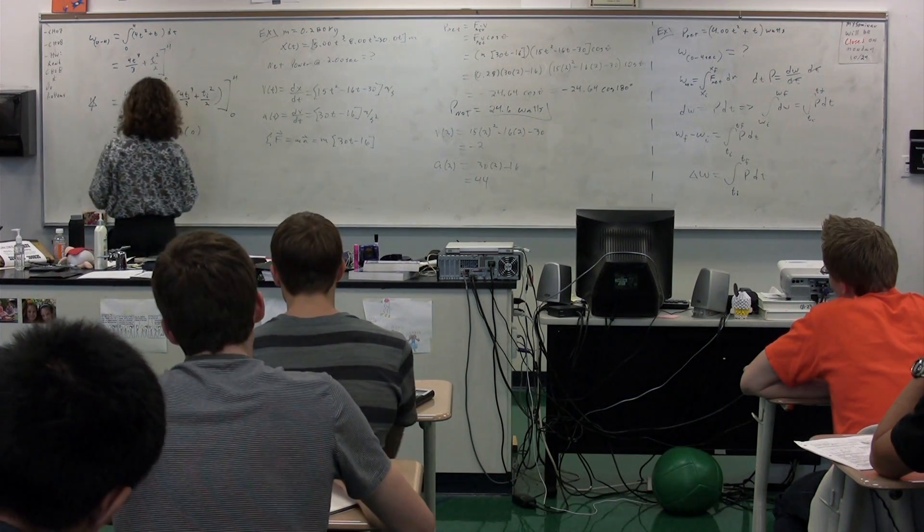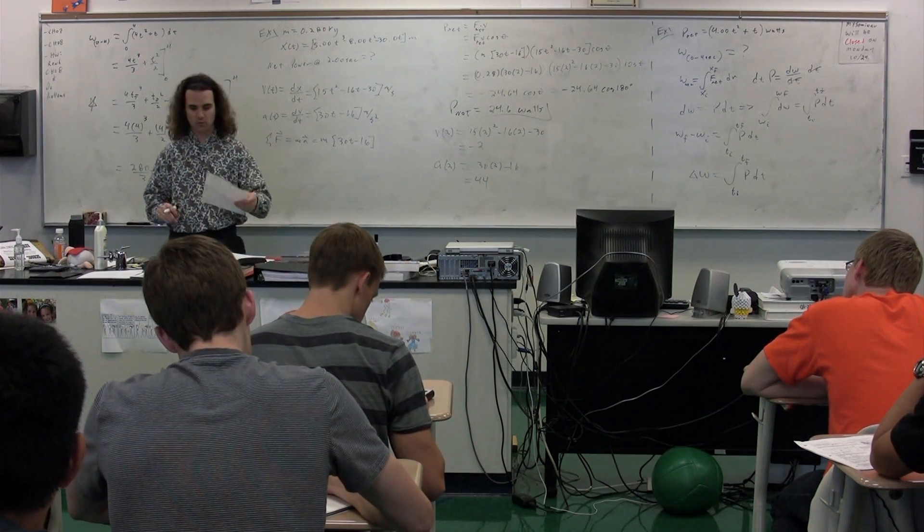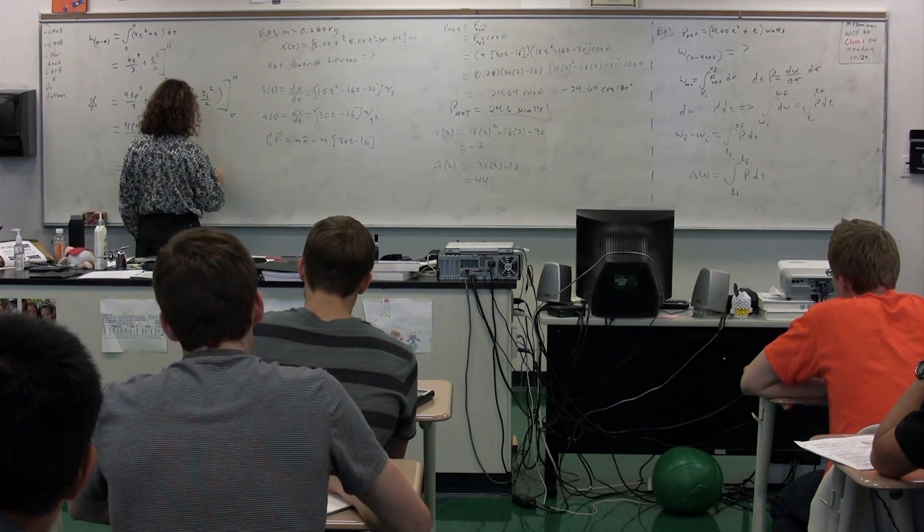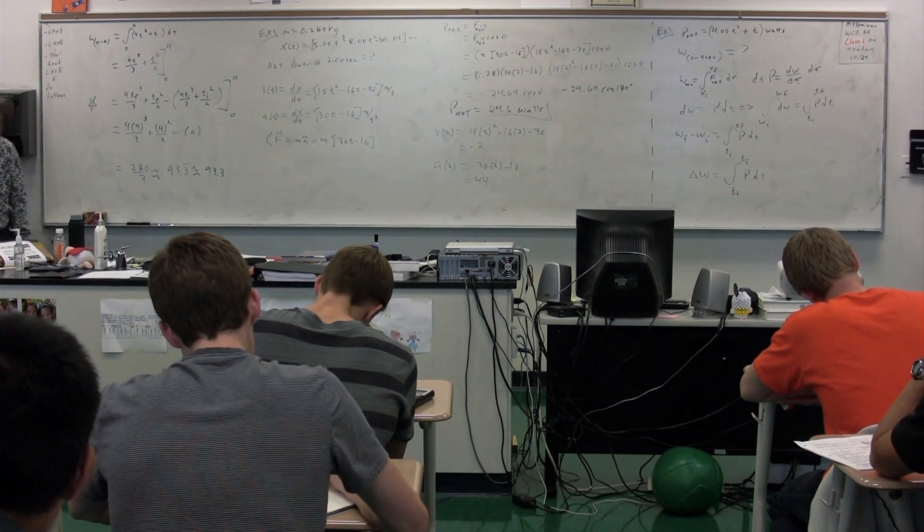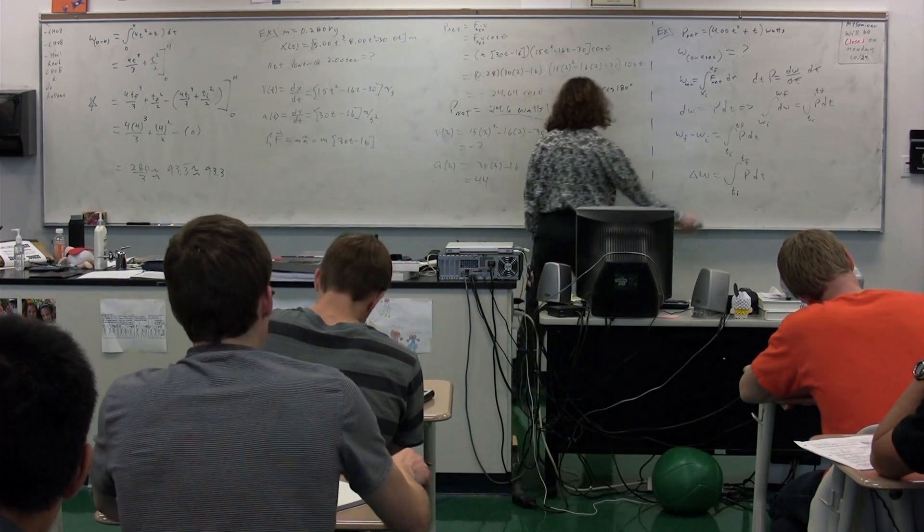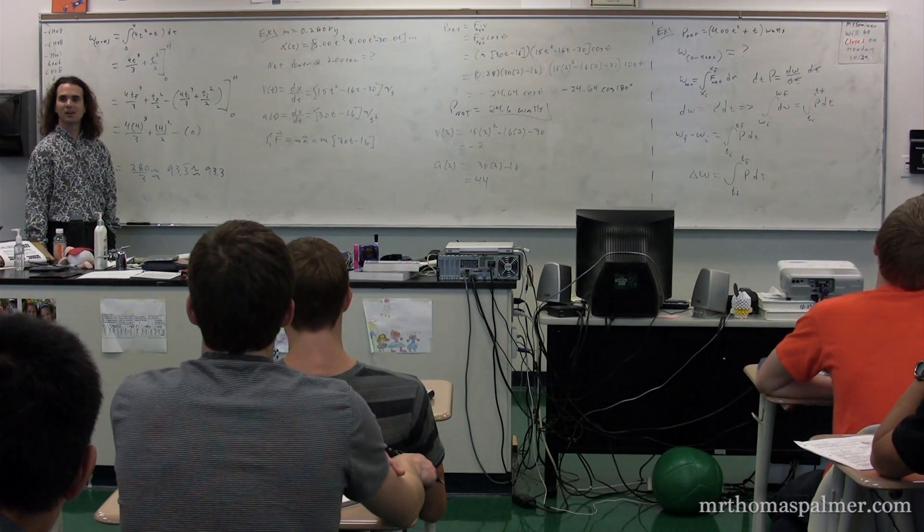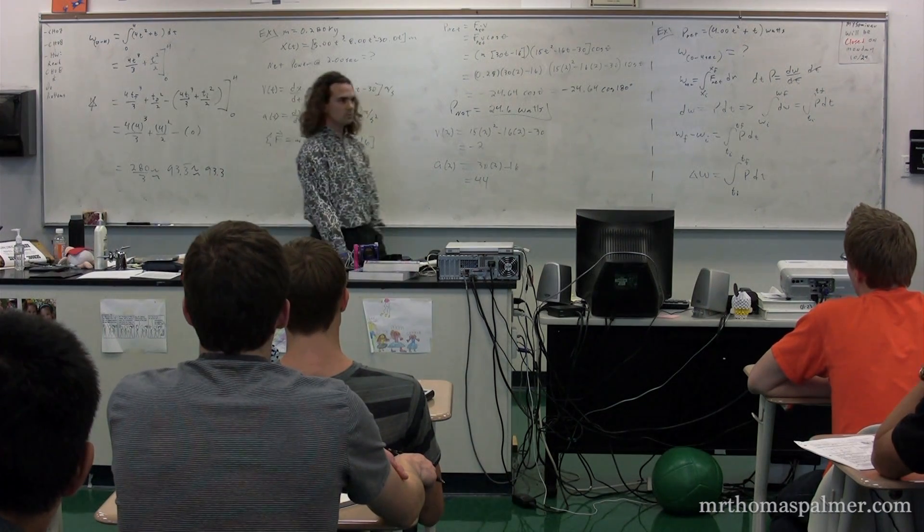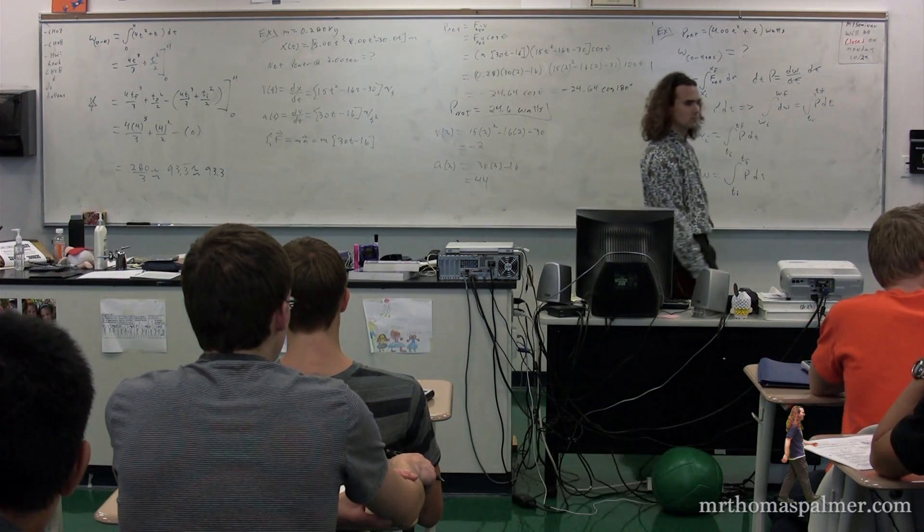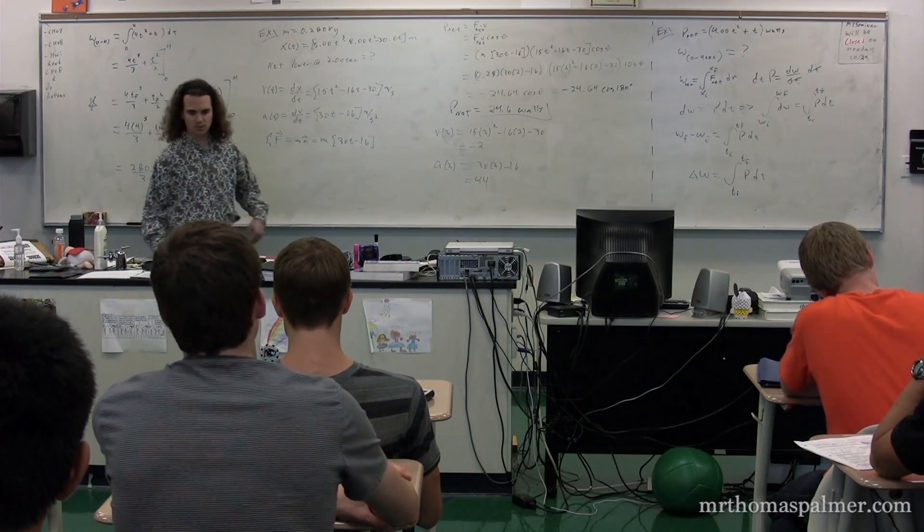280 over 3. Sorry, say again? 280 over 3. 280 over 3. We don't deal in fractions. We deal in real numbers. So what is that as a number? 93.3. 93.3 repeating? No. Okay. So 93.3. 93.3 what, Henry? Go back here. Go back and remember what we figured out. 93.3 joules is the net work, or the work done from 0 to 4 seconds.